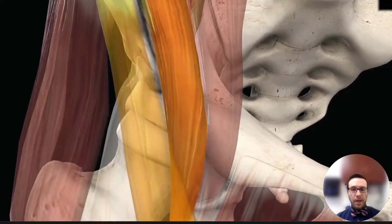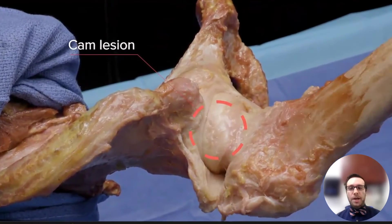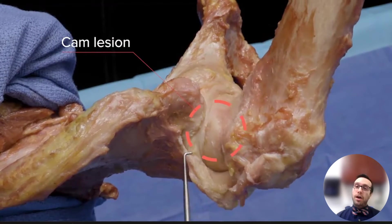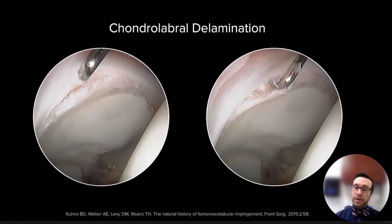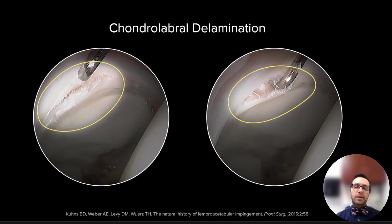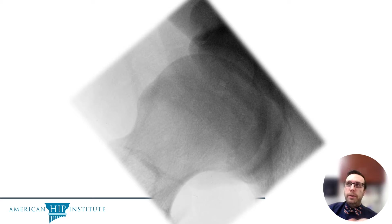In flexion and internal rotation, the cam lesion causes shearing and compressive stress on the labrum, which can lead to tears. As the tear progresses, this can lead to delamination of the cartilage. Think of it as a cheese grinder effect — the more it comes into contact with the rim, the more stress and damage it can cause to the labrum, extending into the cartilage. The following diagram illustrates how, as the neck approaches the acetabular rim, the cam deformity can tear through the labrum and start grinding down on the cartilage at that chondral-labral junction.